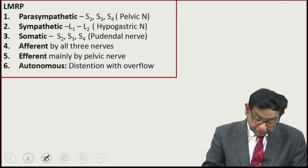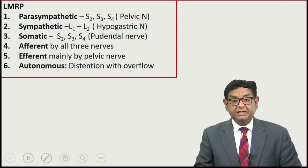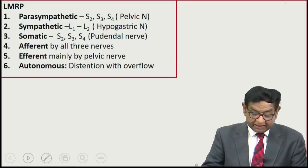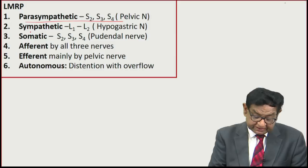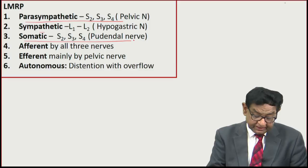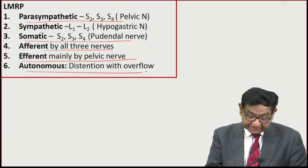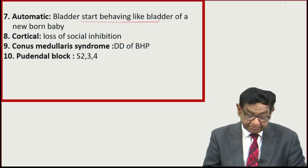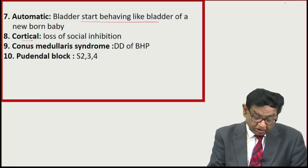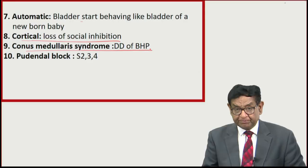Quick recap: parasympathetic nerve is S2-S4, pelvic nerve. Sympathetic is L1-L2, hypogastric nerve. Somatic is S2-S4, pudendal nerve. Afferent by all three, mainly by pelvic nerve. Autonomous bladder: distension with overflow, lesion at S2-S4. Automatic bladder: behaves like newborn, lesion at thorax. Cortical lesion: loss of social inhibition — uninhibited bladder. Conus medullaris syndrome is an important differential of BHP; differentiate by perianal sensation and ankle jerk. Pudendal block covers S2-S4.